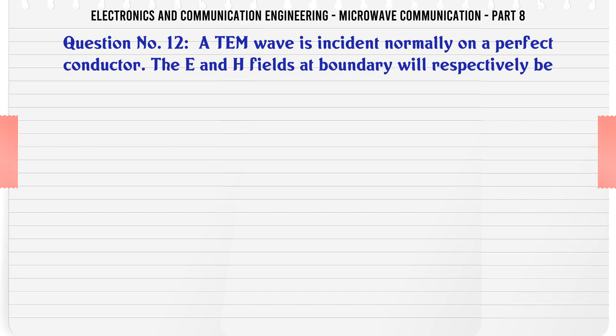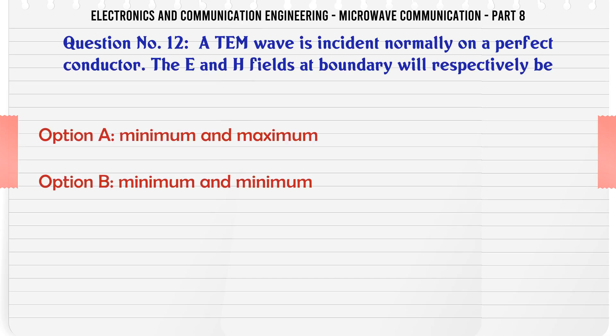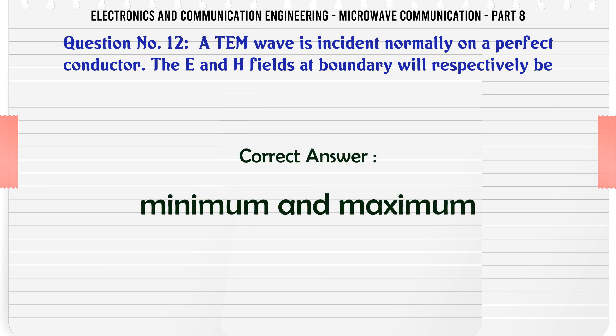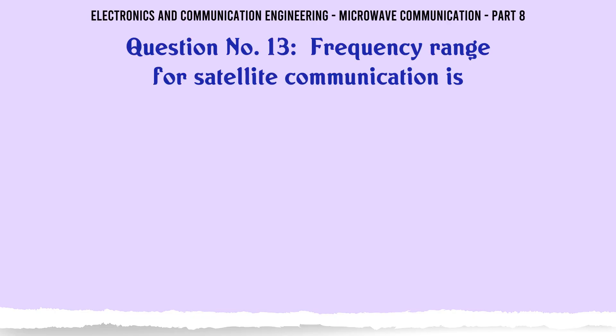A TEM wave is incident normally on a perfect conductor. The E and H fields at the boundary will respectively be — A. Minimum and Maximum, B. Minimum and Minimum, C. Maximum and Minimum, D. Maximum and Maximum. The correct answer is Minimum and Maximum.